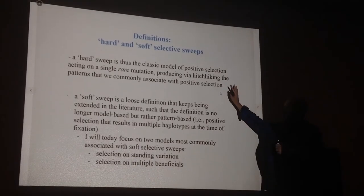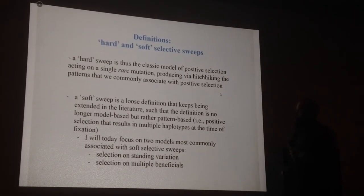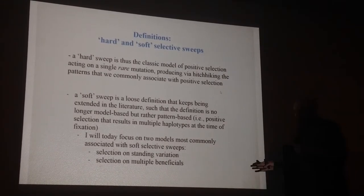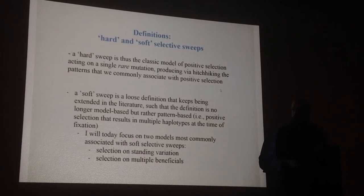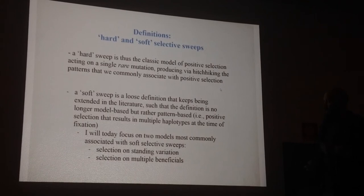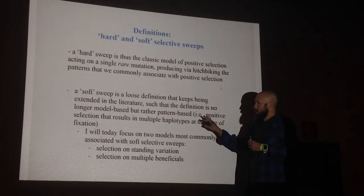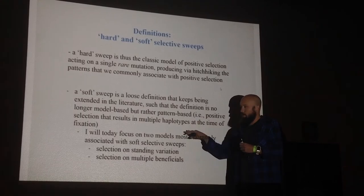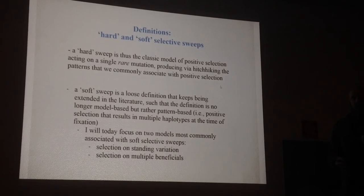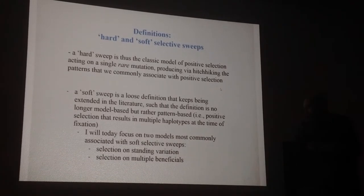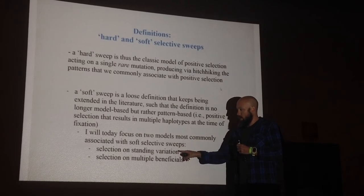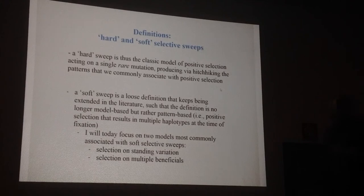The other model commonly invoked for soft sweeps is multiple beneficials. In this case I'm drawing a beneficial mutation occurring at the same site. You have beneficial one, green here. You have a second independent beneficial mutation, the same change, just independently occurring, thus they're on different haplotypes. You get a pattern that's more or less similar. Your beneficial mutation fixes, but rather than fixing your whole local neighborhood, you're bringing multiple haplotypes to intermediate frequency. A hard sweep is this classic model where selection's acting on a rare mutation. A soft sweep isn't really a model to me, it's more of a pattern. It's a definition that keeps being in flux in the literature, but it's not really model-based. It's positive selection that results in multiple haplotypes at the time of fixation.